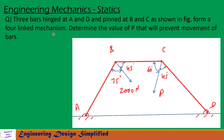Today's problem: three bars hinged at A and D and pinned at B and C as shown in the figure form a four-link mechanism. Determine the value of P that will prevent movement of the bars.